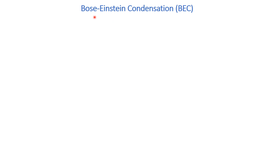As-salamu alaykum. As an application of Bose-Einstein statistics, we are going to explain the Bose-Einstein condensation. The Bose-Einstein condensation is a phenomenon in which all the bosons occupy the ground energy state. When we were discussing Bose-Einstein statistics, we said that there is no restriction on the number of bosons occupying a single energy state because bosons are the particles which do not obey the Pauli exclusion principle.